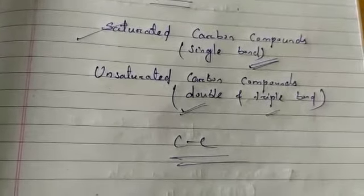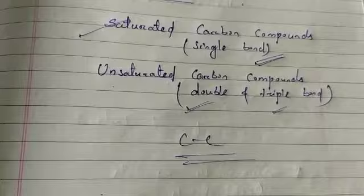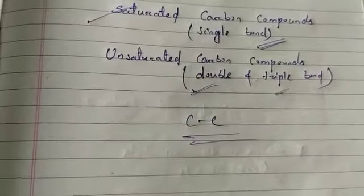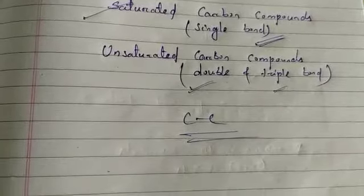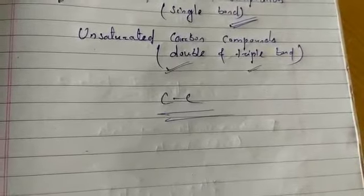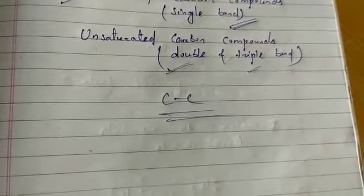This gives us a large number of compounds with many carbon atoms linked with each other. Another factor noticed in carbon is that since carbon has a valency of four, it is capable of bonding with four atoms of carbon or atoms of some other monovalent element. Compounds of carbon are formed with oxygen, hydrogen, nitrogen, sulfur, chlorine, and many other elements, giving rise to compounds with specific properties which depend on the elements other than carbon present in the molecule.